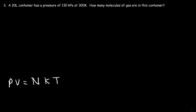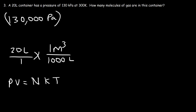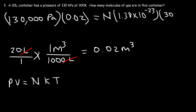Using PV = NkT, the pressure is 130,000 pascals (since 1 kilopascal = 1,000 pascals). The volume in cubic meters is 20 ÷ 1,000 = 0.02 cubic meters. N is the number of molecules we're solving for, k is 1.38 × 10⁻²³, and the temperature is 300 Kelvin.